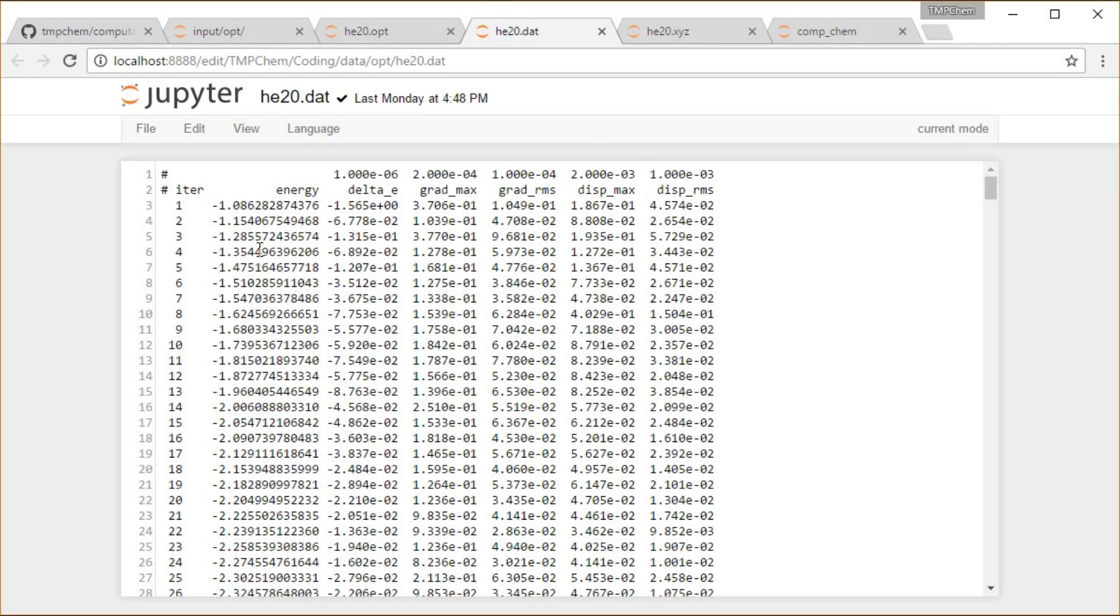So one output file is the result of the energy as we're going here along the various trajectories. What's the maximum element in the gradient? What's the root mean squared of the gradient? How far am I displacing my atoms? What's the maximum and root mean squared of that? How much is my energy changing?